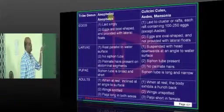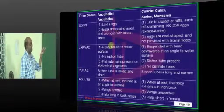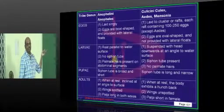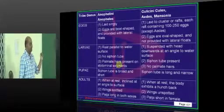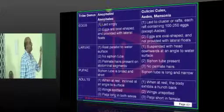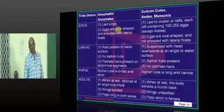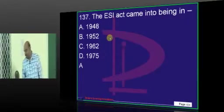Aedes: single egg, boat-shaped egg, parallelly resting to the water surface without siphon tube. These are all the features of Anopheles that you have to ultimately remember.